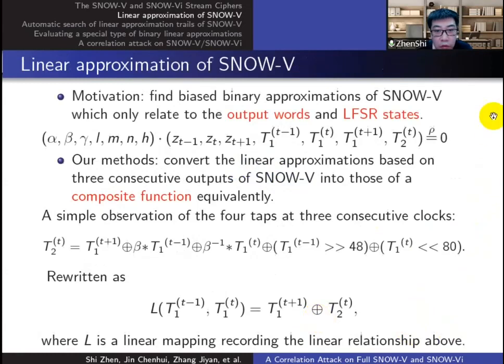Now we introduce our way to construct the correlation attack distinguisher. Our motivation is to find a biased binary approximation of this form. A distinguisher only relates to the output words and the FSM states. The method is to convert the linear approximation equation into the approximation of a composite function. Besides, there is a linear relationship between the four types, meaning we can use three of them to generate the rest one.